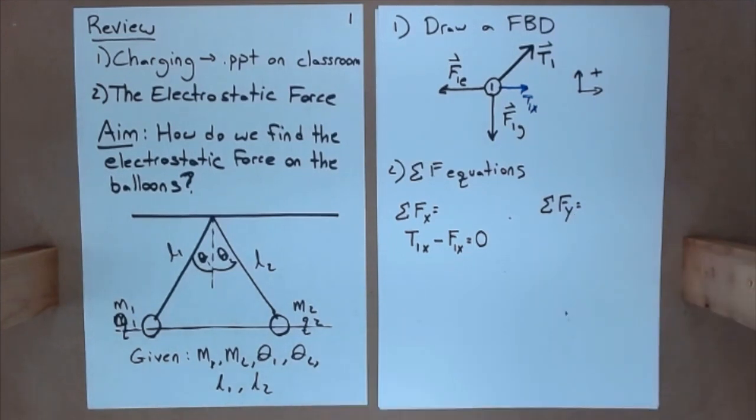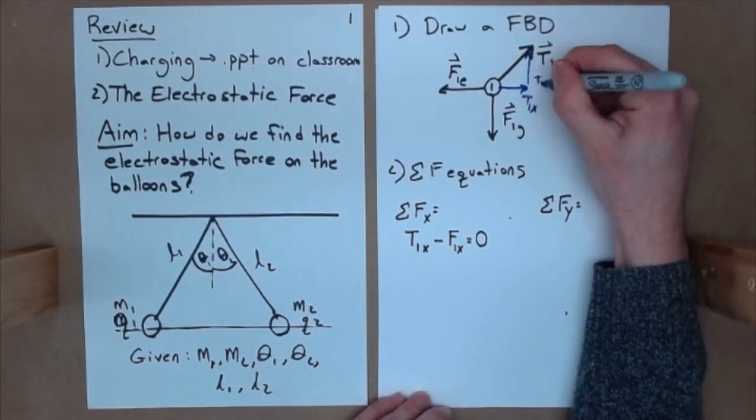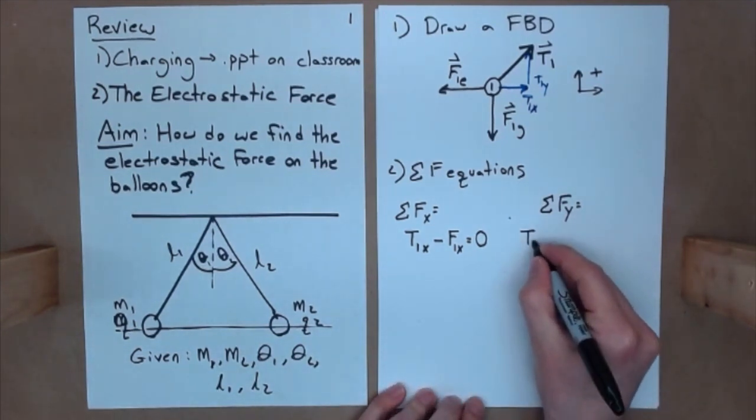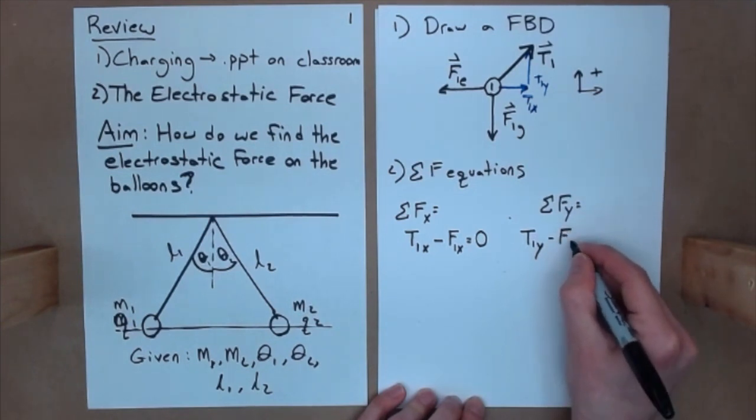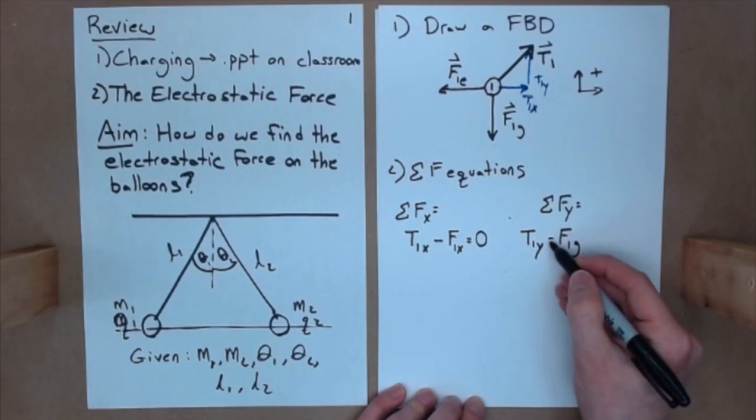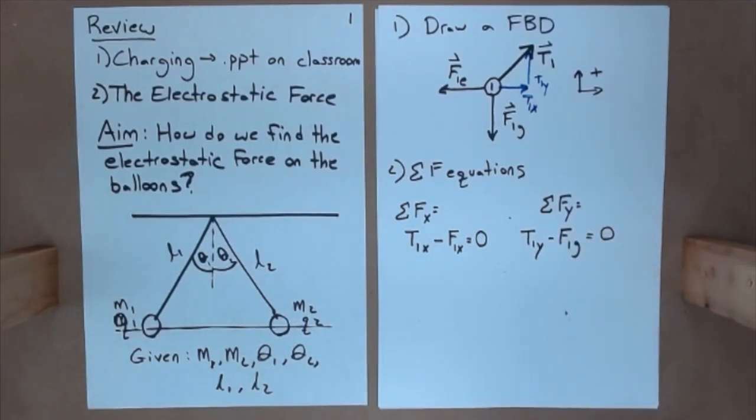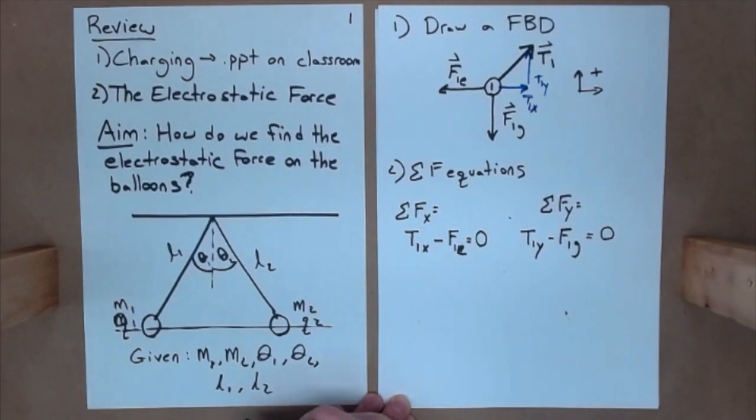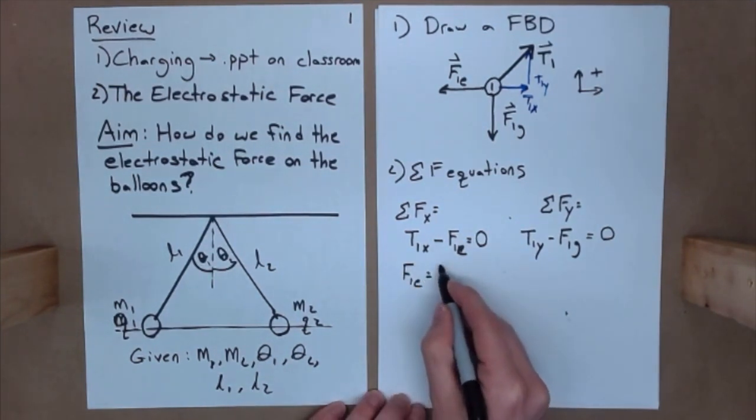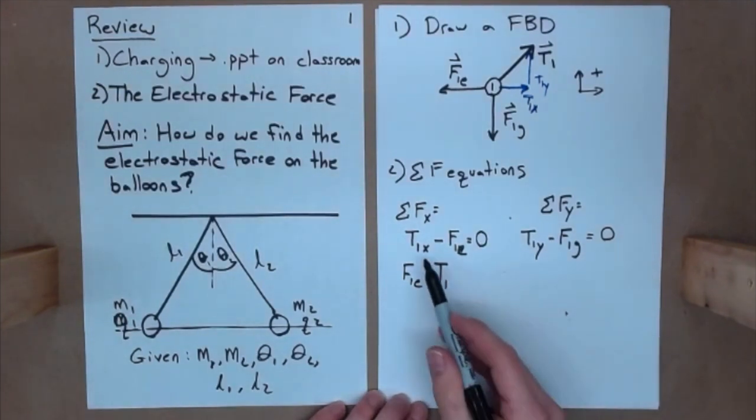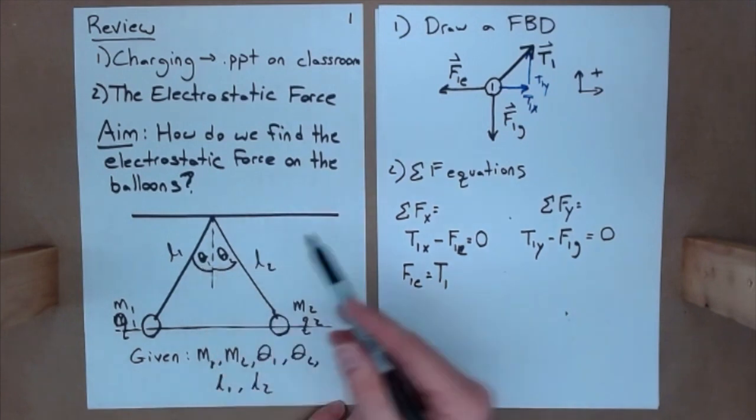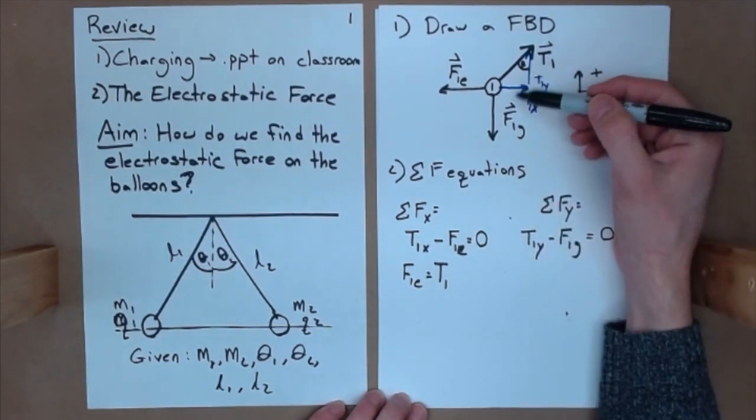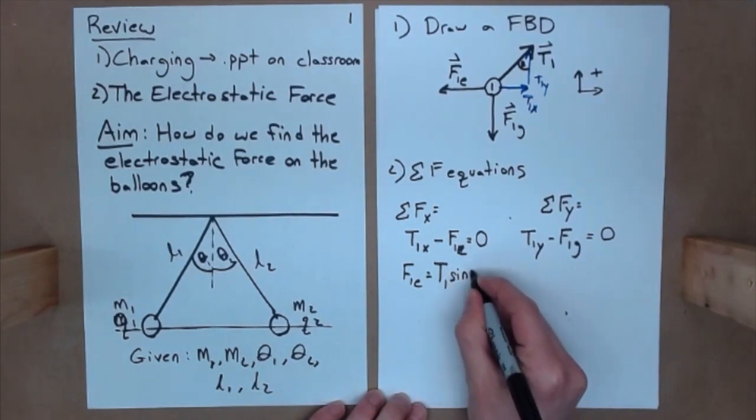In the y direction, I have the y component of the tension, T1y. And so, I can say that this net force equation will be T1y minus F1g, again, getting rid of the vector, because I'm using the negative, equals 0. I can solve these out a little bit, and what I can find here is that F1e is equal to T1x, and well, what is T1x? We know theta here, right? And that's with the vertical, so that's actually theta right there. And so, if I take a look, I need to use, for the x, this sine function, so T1 sine of theta 1.